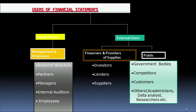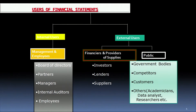Before we go to ratio analysis, let us see who are the users of financial statements. We have internal users and external users. The internal users are all those working inside the firm — the top level management, the board of directors, the partners, the promoters, the managers at various levels, the internal auditors, and the employees. They are all keen to know the results, and you as an accountant have to do the task of ratio analysis and making it more meaningful for them.